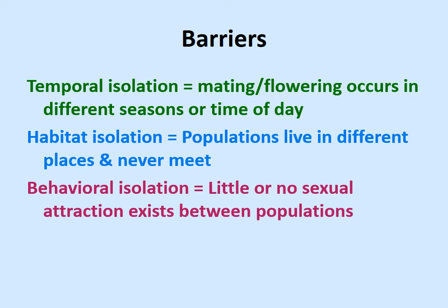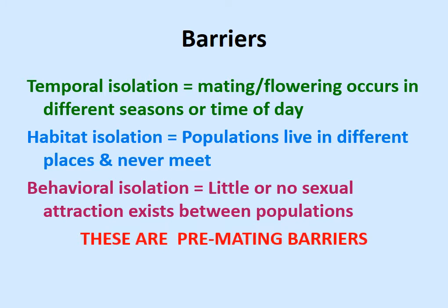It could even be behavioral — little or no attraction between members of different populations, with many examples of how species have differences in their behavior. These are basically pre-mating barriers. If the species can't find each other — if members of the same species but different populations can't find each other — they can't mate.